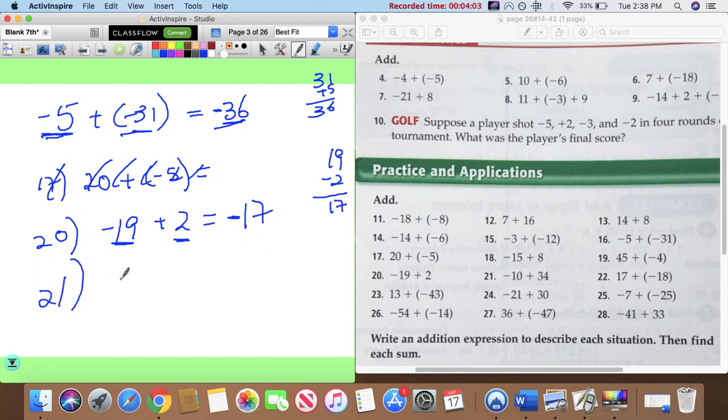Twenty one: negative ten plus thirty four. Miren si son amigos o no. They're not. One is negative, one is positive. So, obviously, you know positive numbers. It's thirty four, so it's going to be positive. ¿Y por cuánto? Porque tienen veinticuatro más. Quién va a ganar los positivos? Porque hay veinticuatro más.